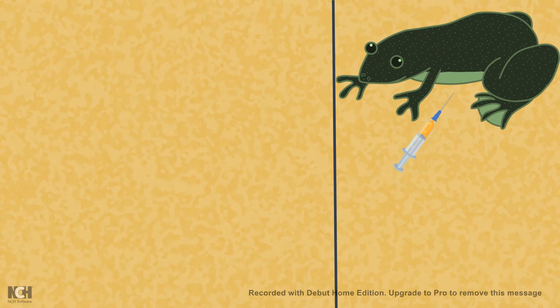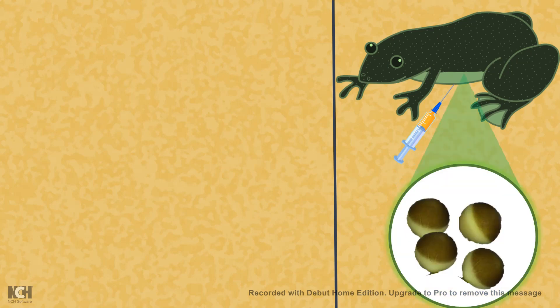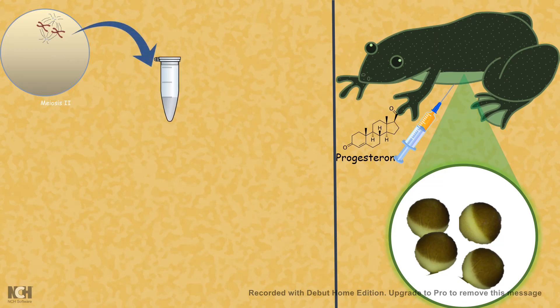So they injected the frog with progesterone and then took out its mature oocytes. From the mature oocytes, they took out the cytoplasm or did a cytoplasmic extract. They were biochemists, so they were always interested about extracts and everything.